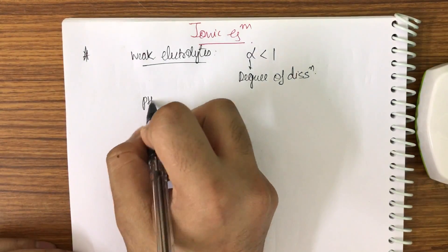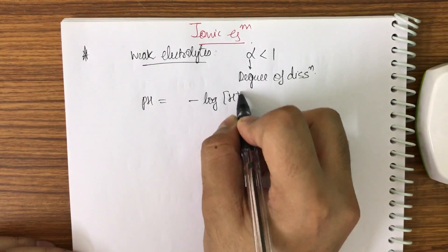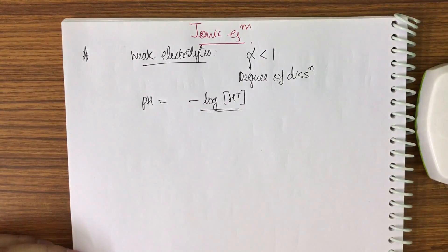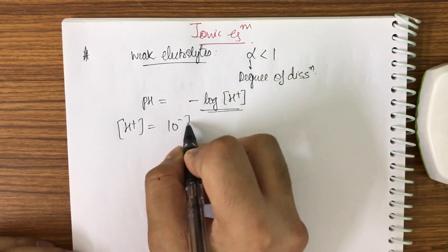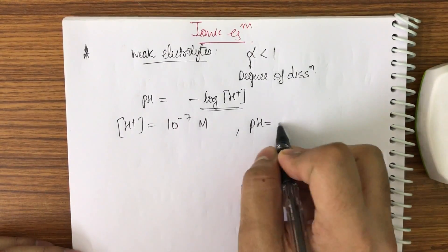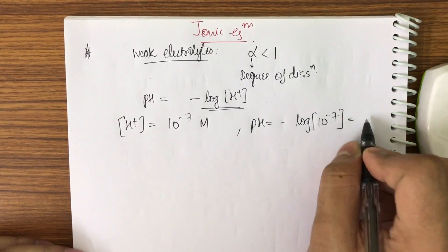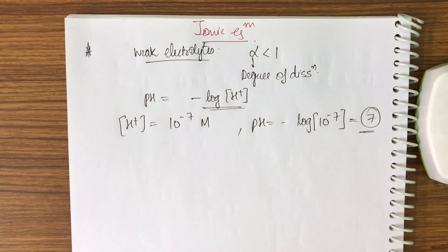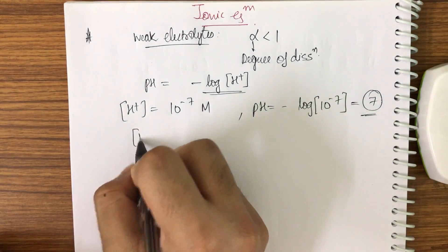What is pH? pH is basically minus log of H⁺ concentration. For example, if H⁺ concentration is equal to 10 to the power minus 7 molars, then pH will be minus log of 10 to the power minus 7, which equals 7. You must be familiar with the basics of logarithms.